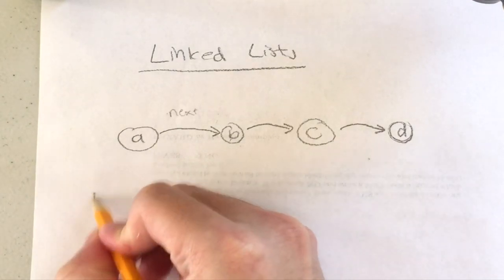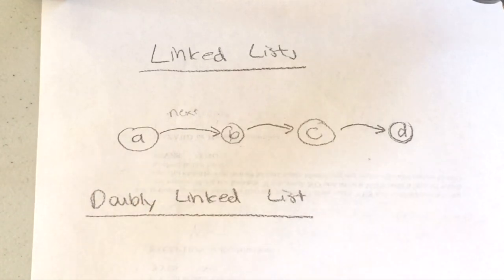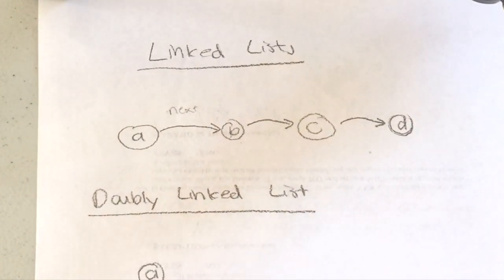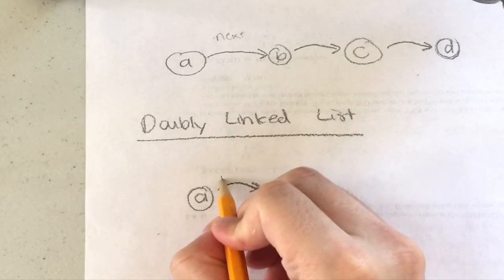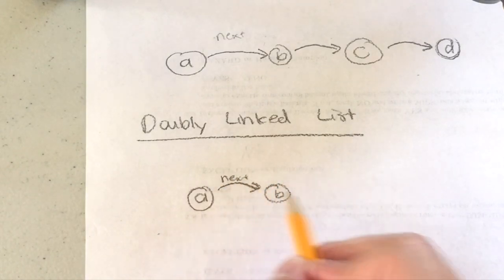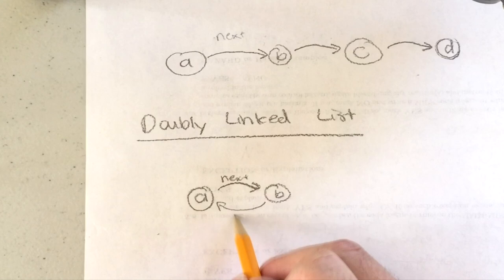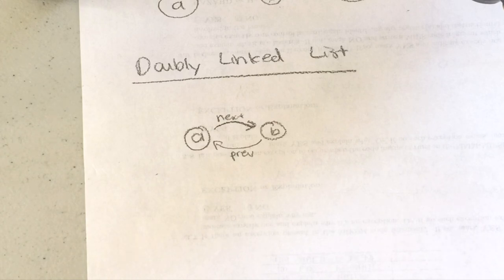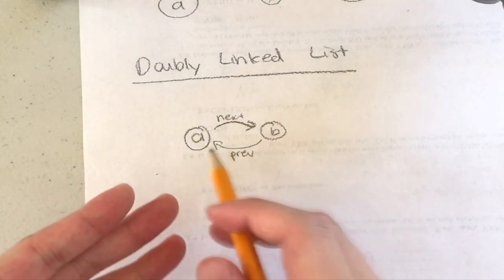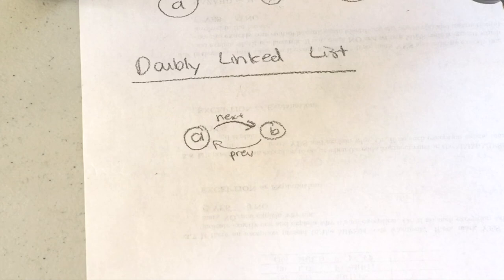Now let's talk about doubly linked lists. A doubly linked list is the exact same thing as a linked list, except we have another pointer called 'previous.' So the next pointer goes forward, and the previous pointer goes backward. For example, if I add A and B, A's next points to B and B's previous points back to A.